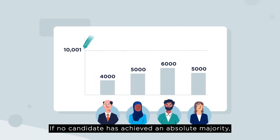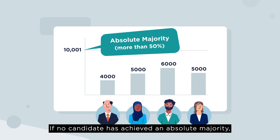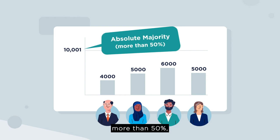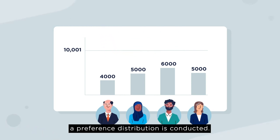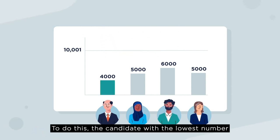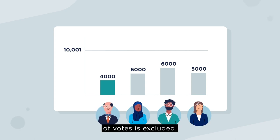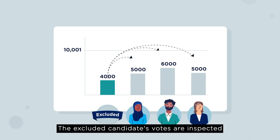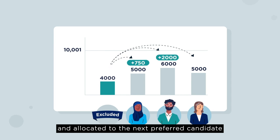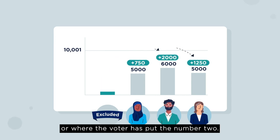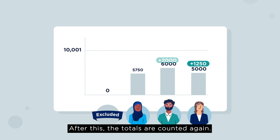If no candidate has achieved an absolute majority — more than 50% — a preference distribution is conducted. To do this, the candidate with the lowest number of votes is excluded. The excluded candidate's votes are inspected and allocated to the next preferred candidate, or where the voter has put the number two. After this, the totals are counted again.